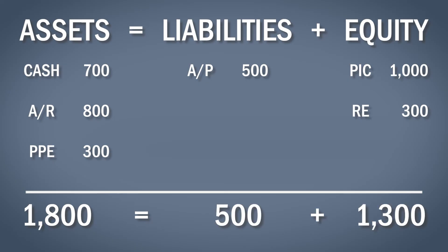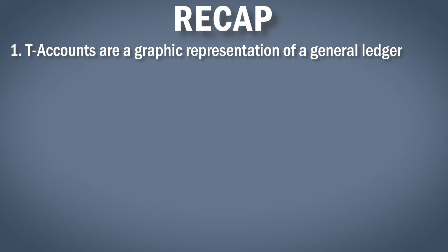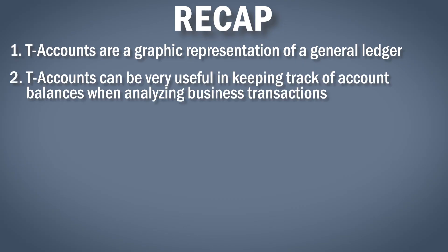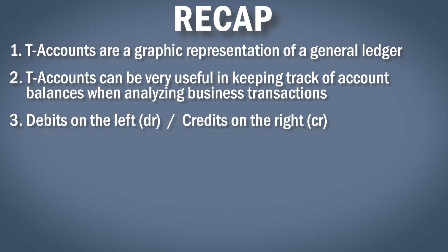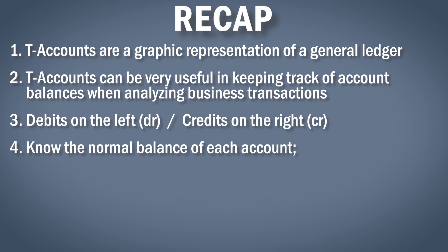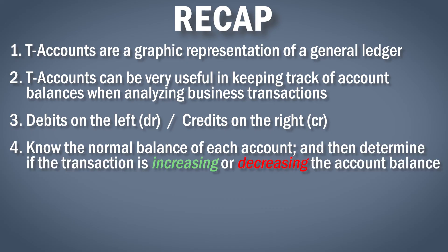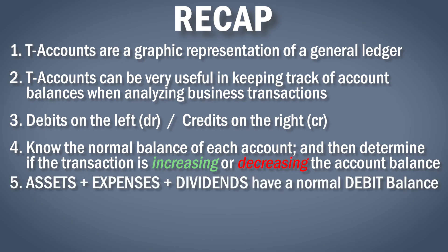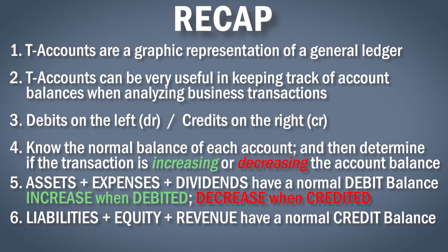We have successfully completed the accounting equation using T-accounts. To recap: T-accounts are a graphic representation of a general ledger account and are very useful in keeping track of account balances when analyzing business transactions. Remember, debits are on the left with DR and credits are on the right with CR. The key to knowing when to debit or credit a T-account is knowing the normal balance of each account and determining if the transaction is increasing or decreasing that balance. Assets, expenses, and dividends have a normal debit balance — they increase when debited and decrease when credited. Liability, equity, and revenue accounts have a normal credit balance — they increase when credited and decrease when debited.